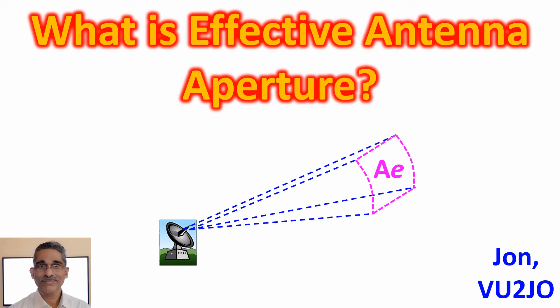Effective antenna aperture can be defined as the area oriented perpendicular to the direction of the incoming electromagnetic wave which would have the same amount of power from that wave which is produced in the antenna on receiving it.